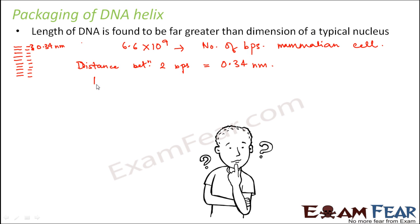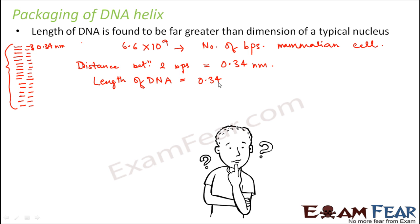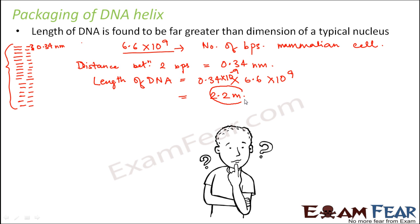Now if I have to calculate the length of the DNA: let us suppose this is the total length of the DNA. We know this distance is 0.34 nm and we also know the total number of base pairs. For example, if there are 20 base pairs, the total length would be 0.34 × 20. In the same way, the length of DNA = 0.34 × 6.6 × 10⁹ base pairs. Since 0.34 nm = 0.34 × 10⁻⁹ meters, when we calculate this it comes out to be 2.2 meters. So this is the length of the DNA.